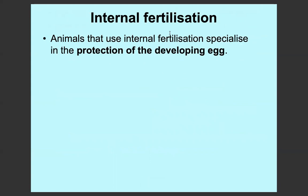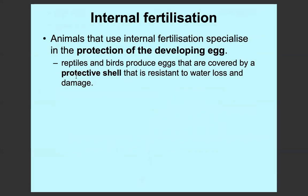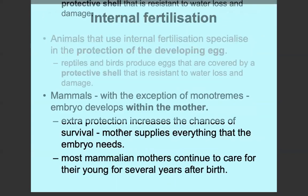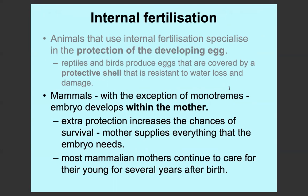Animals that use internal fertilisation specialise in the protection of the developing egg. Reptiles and birds produce eggs covered by a protective shell that is resistant to water loss and damage. Mammals, except for monotremes like platypuses, have their embryo develop inside the mother. Most mammals have their embryo develop inside the mother, which is extra protection because the mother is protecting the developing young, increasing the chance of survival. The mother also supplies all the nutrients, gases, and everything for the embryo. Most mammalian mothers have quite a high level of parental care and continue to care for the young for several years after birth.